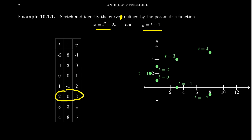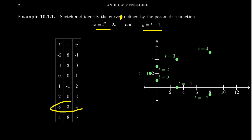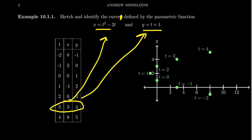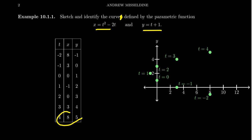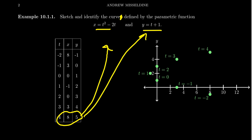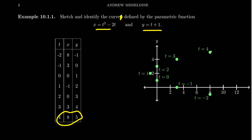When t equals 2: x equals 4 minus 4, which is 0; y equals 2 plus 1, which is 3 — giving the point (0, 3). When t equals 3: x equals 9 minus 6, which is 3; y equals 3 plus 1, which is 4 — giving the point (3, 4). When t equals 4: x equals 16 minus 8, which is 8; y equals 4 plus 1, which is 5 — giving the point (8, 5).